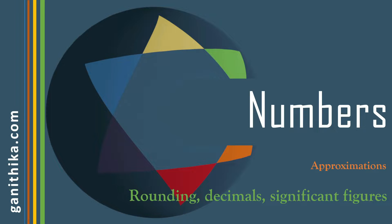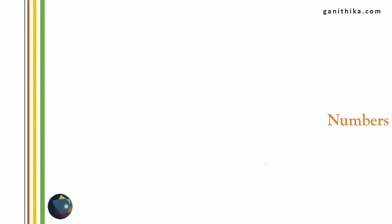We will see how to round off whole numbers, how to approximate decimals, and how to write numbers in certain significant figures — say for example, three significant figures or two significant figures. So let's proceed now.